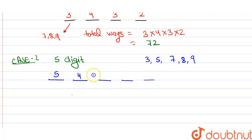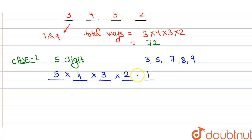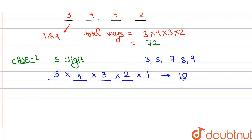At the second position we can use 4 digits, then 3, then 2, and finally 1, because repetition is not allowed — we can use each digit only once. So the total number of 5-digit numbers equals 5 × 4 × 3 × 2 × 1 = 120.